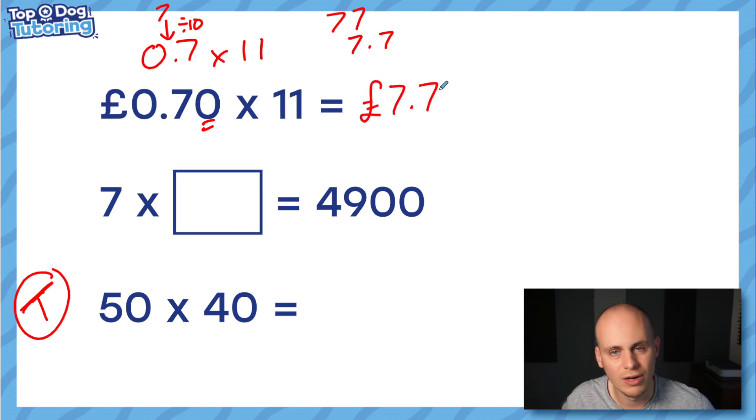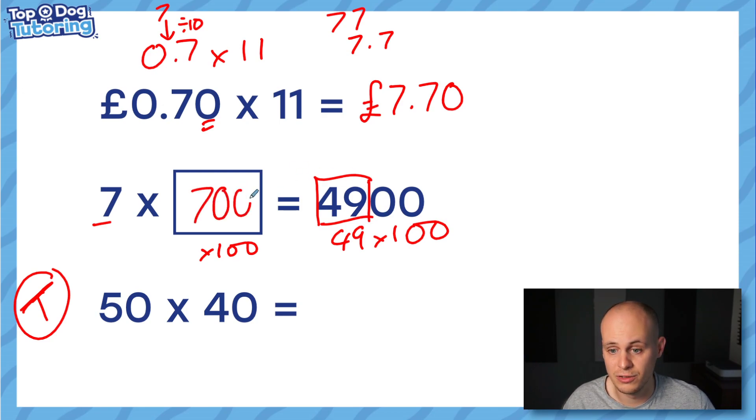On to the next one. This time we've got the answer here. 7 x something = 4,900, and just think of this as 49 x 100 hence the two zeros. Whatever this number needs to be, it needs to be something times 100 to make this up. 7 x 7 = 49, times it by 100 to make up for these two zeros, I get the answer 700. It makes sense.